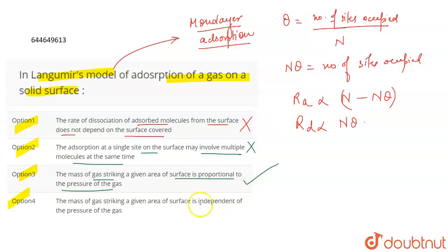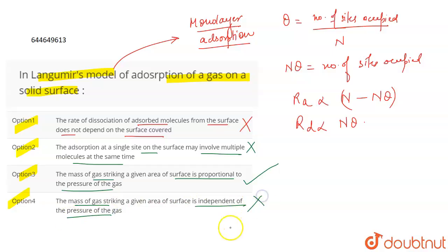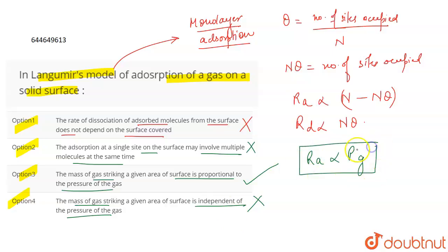The fourth statement says the mass of gas striking a given area of the surface is independent of the pressure of the gas. This is incorrect, because it does depend upon the pressure. The rate of adsorption also depends upon the pressure of the gas. Therefore, option three is the correct answer.